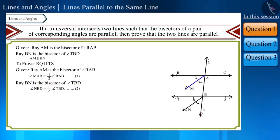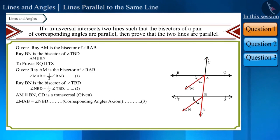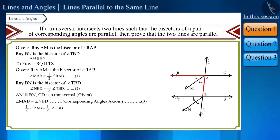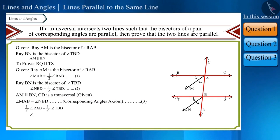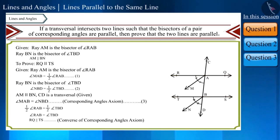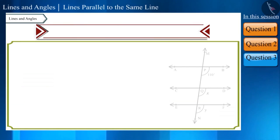Ray AM and ray BN are parallel and CD is a transversal. Using the corresponding angles axiom, we can say that angle MAB and angle NBD will be equal. Substituting the values of equations 1 and 2 into equation 3, angles RAB and TBD are equal. These are corresponding angles made by transversal CD with lines RQ and TS, and they are equal. Therefore, using the converse of the corresponding angles axiom, lines RQ and TS are parallel.